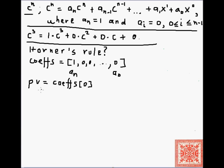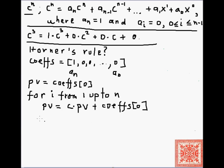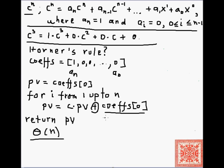We get the first coefficient and set the polynomial value to the first coefficient — or the zeroth coefficient in our case. Then we go through the remainder of the array of coefficients, setting the polynomial value to c times pv plus coefs of zero, and then return the value of the polynomial. The asymptotics of this algorithm is clearly Θ(n), which is linear in the length of the coefficients. But we have a lot of useless additions of zero, because all of the coefficients except the very first one, a_n, are zeros.